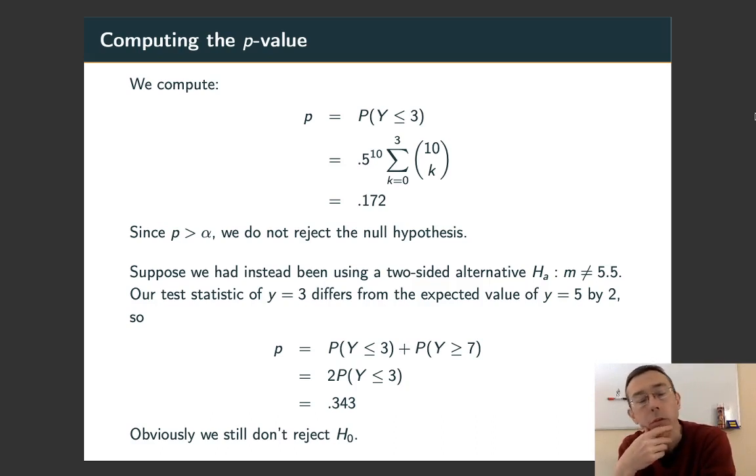So what if we had been using a two-sided alternative? What if we had only cared about the alternative that the median was not equal to 5.5, and that we weren't assuming it was only less? So the idea is that the test statistic of 3 differed from the expected value of 5 by 2, so we should think about the probability of being less than or equal to 3 or greater than or equal to 7, 7 being 2 more than the median.